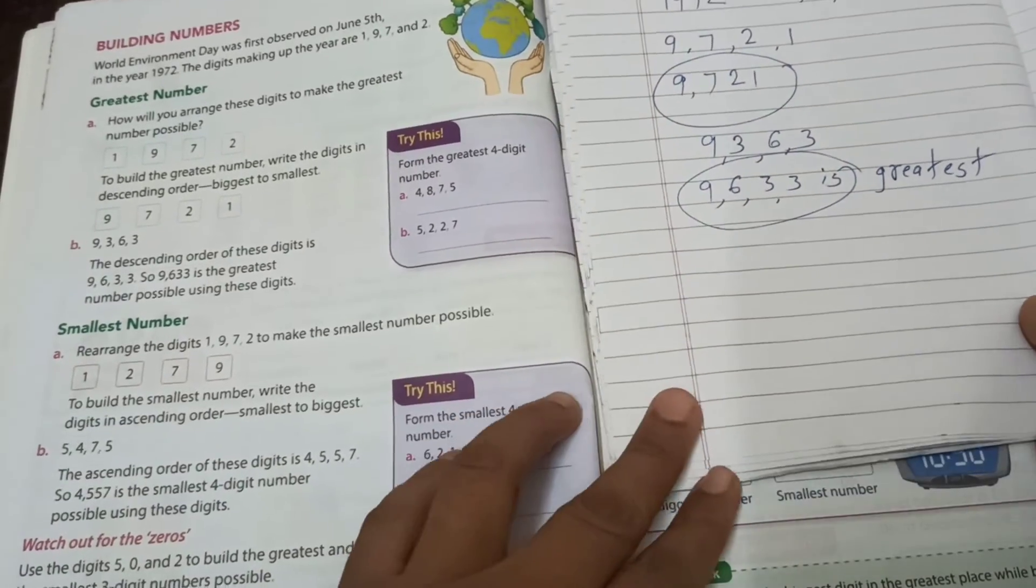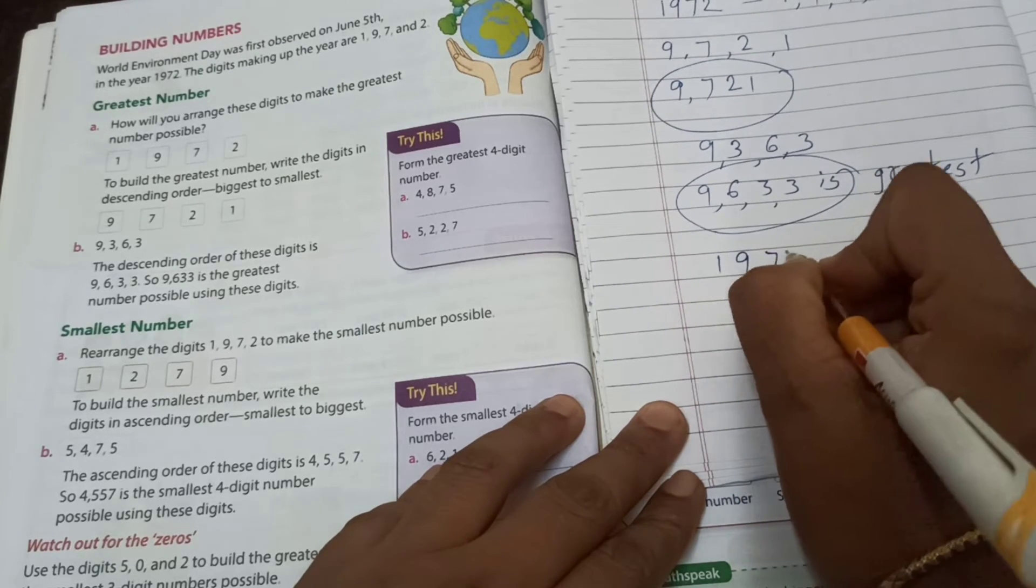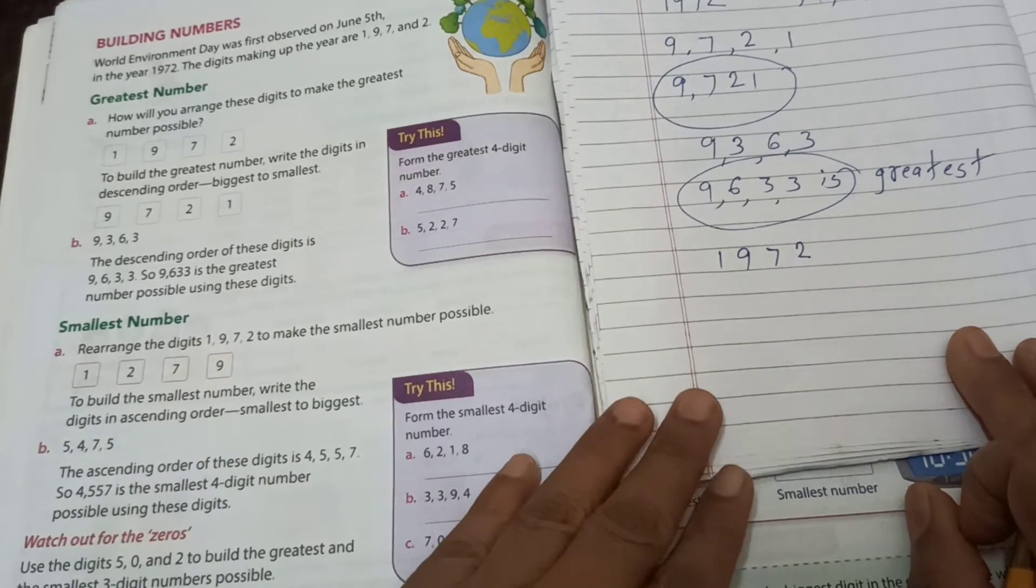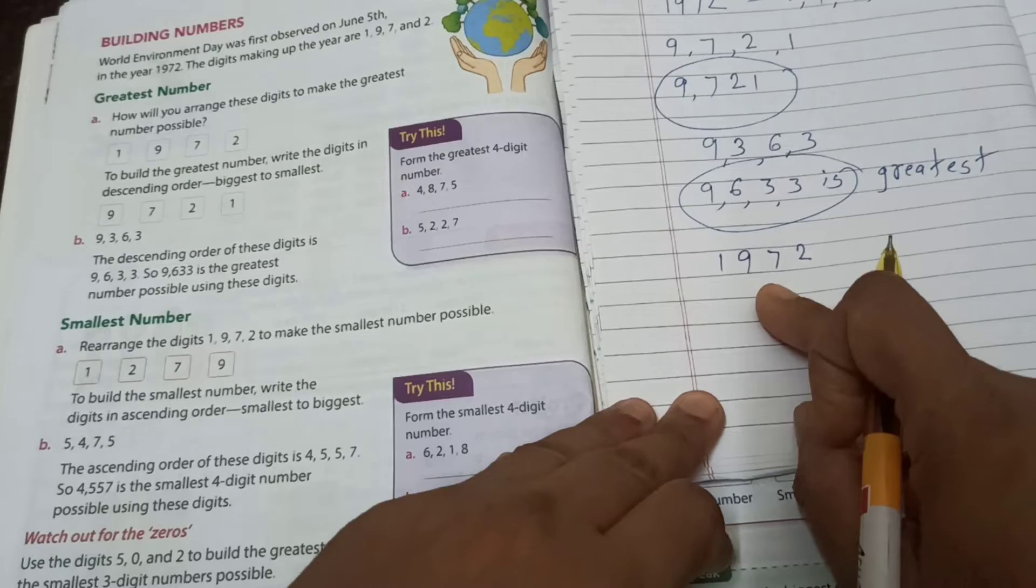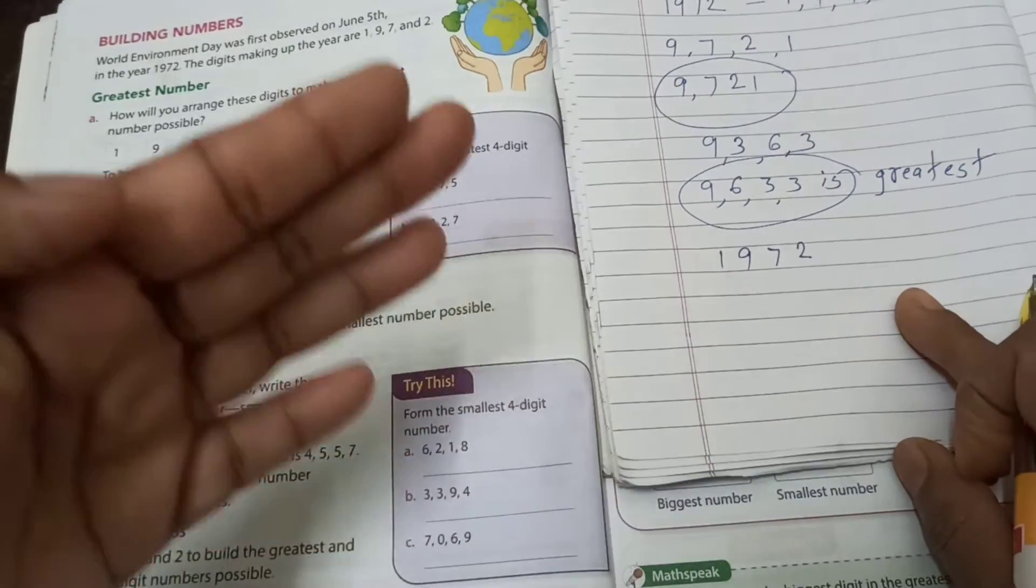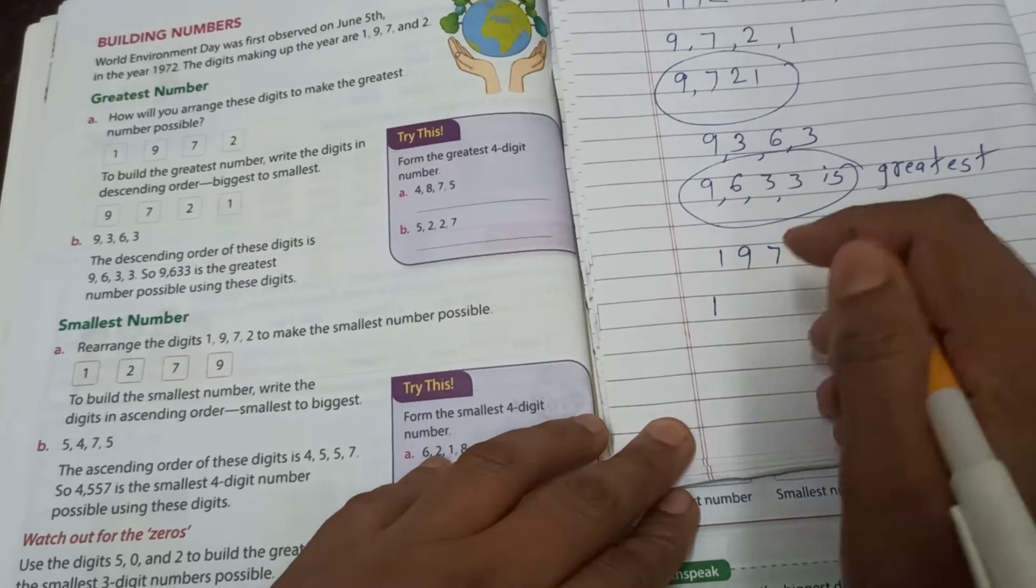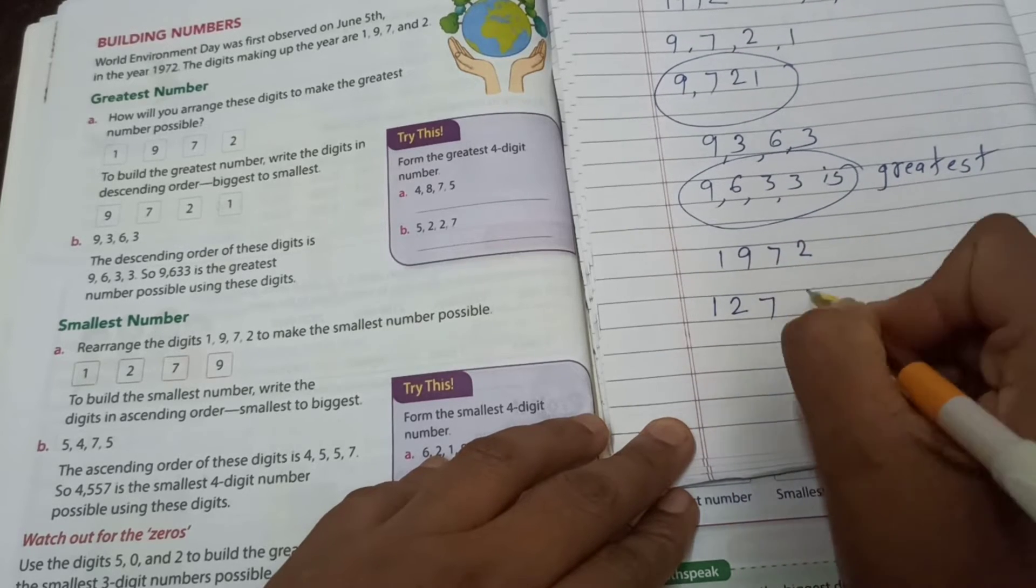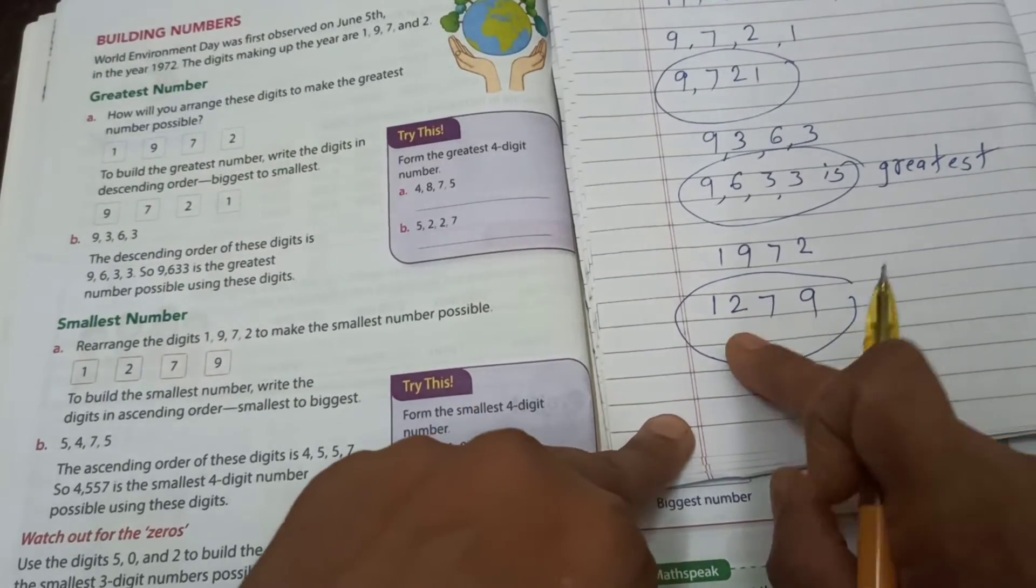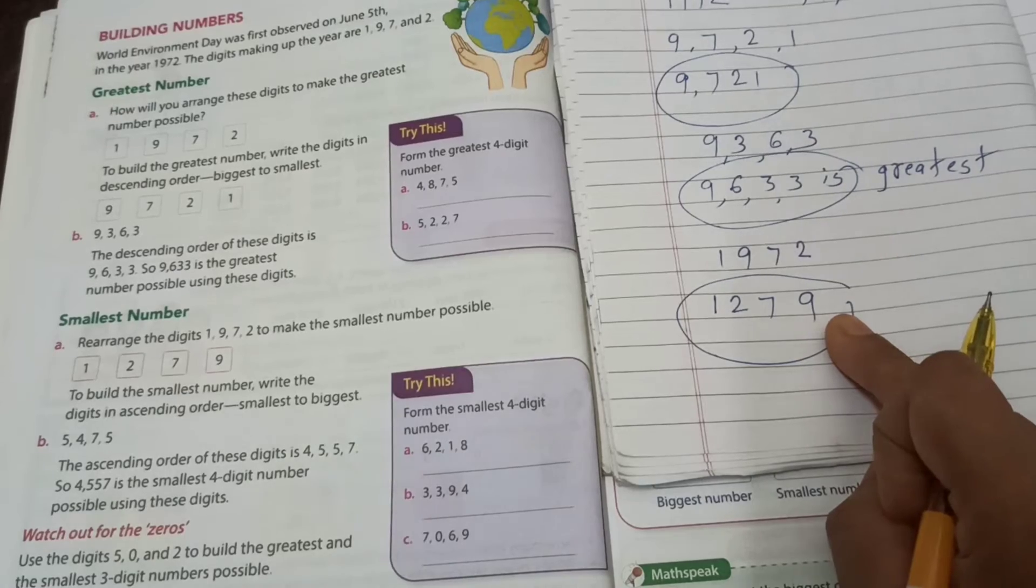See. 1, 9, 7, 2. And textbook saying make the smallest number. Is it possible or not? Yes, it is possible. Arrange these digits in ascending order. Ascending means smallest to greatest number. Which is the smallest? This one, 1. So write down 1. Then 2, then 7, then 9. Yes, we got a smallest number, 1,279.